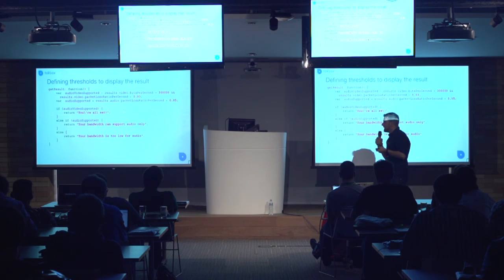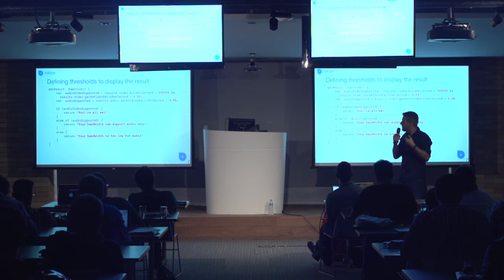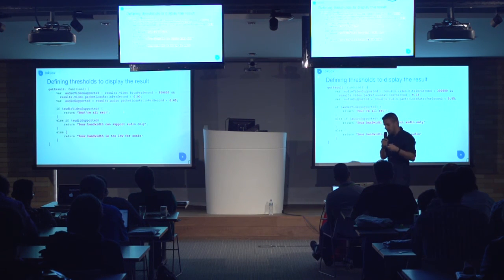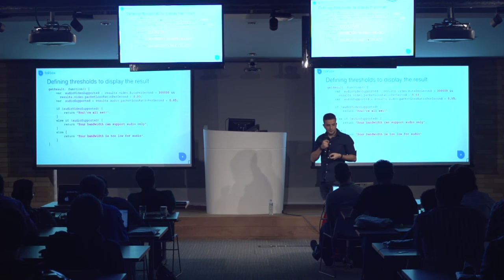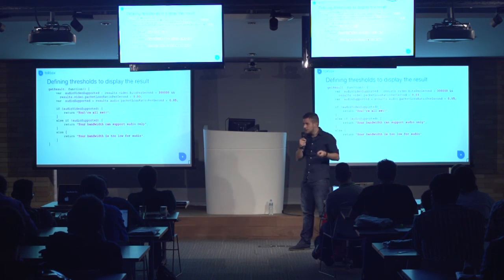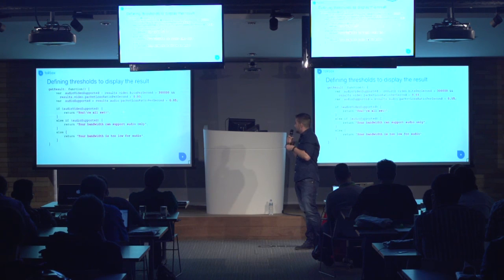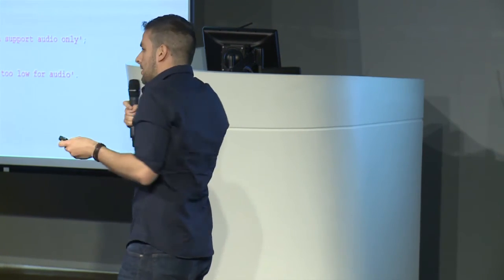Once I have this information, I can create some thresholds to display results. The user is okay for audio and video if the audio bitrate is higher than 300 kilobits per second and the video packet loss is less than 3%. If the user doesn't satisfy this condition, I can try audio only — so if the audio packet loss is less than 5%, they're okay for audio only. I have basically three possibilities: audio and video, audio only, or neither — in which case I say your bandwidth is just too low.